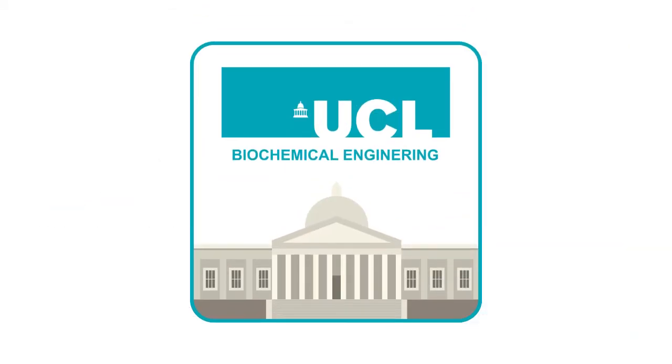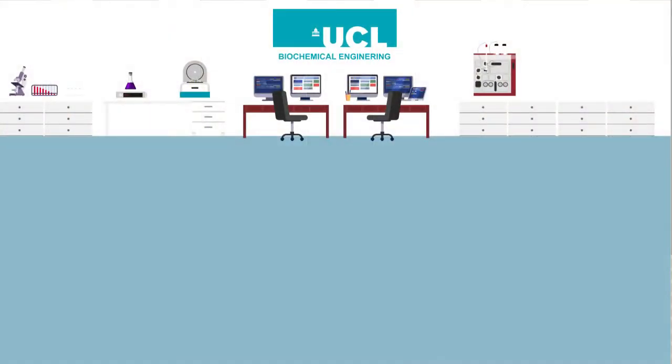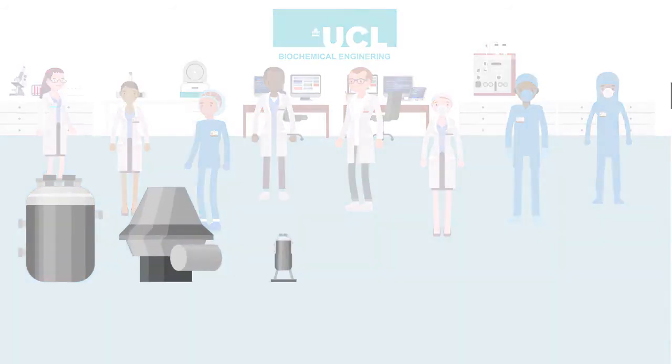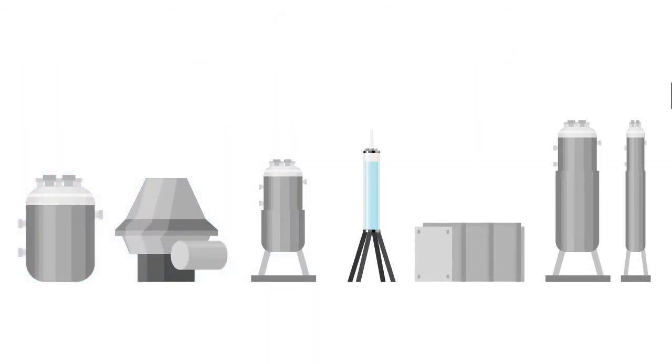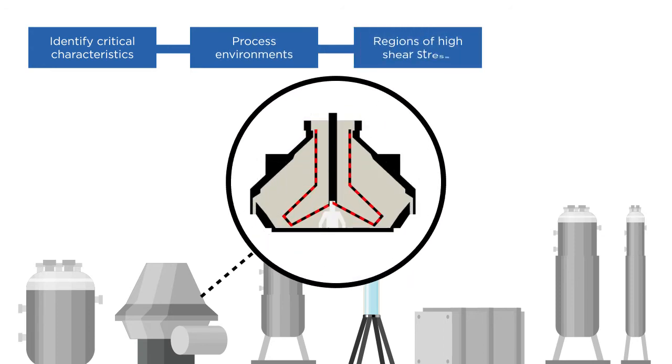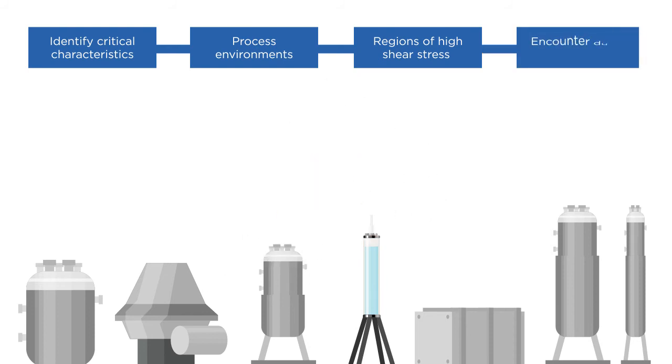UCL's pioneering research programs on ultra-scale-down methods were performed with a wide range of industrial partners. These projects demonstrated how to take a potential process sequence for industrial manufacture and then identify critical characteristics in the process environments, such as regions of high shear stress which new biopharmaceuticals will encounter during manufacture.